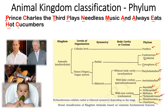So that's it: Porifera, Cnidaria, Ctenophora, Platyhelminthes, Nematoda, Mollusca, Annelida, Arthropoda, Echinodermata, Hemichordata, and Chordata. These are all the phyla we have in the animal kingdom.